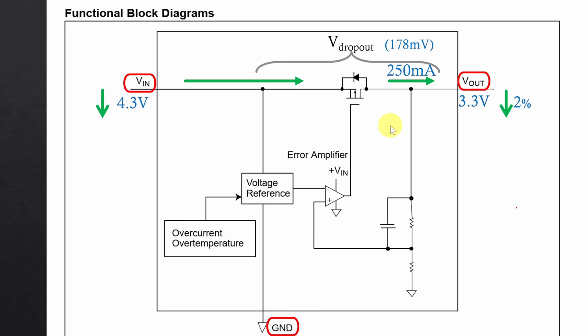178mV is the dropout voltage for maximum output current. If you are drawing less than maximum output current the dropout voltage will be lower than 178mV.